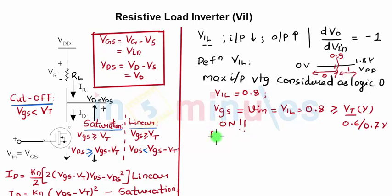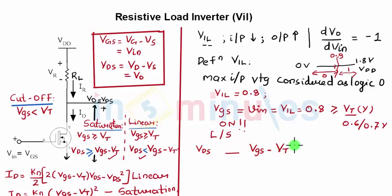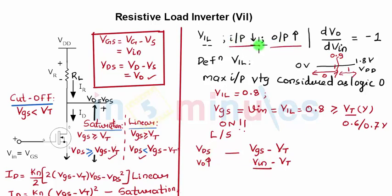Now I need to determine whether the transistor is in the linear region or in the saturation region. I'll use the condition comparing VDS versus VGS minus VT. VDS is nothing but Vout, and VGS is VIN minus VT. Since the output is high and the input is low, we get a greater-than sign, which proves that my transistor is in the saturation region.